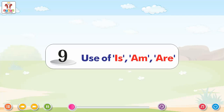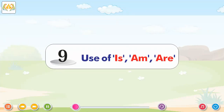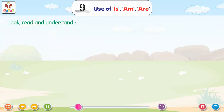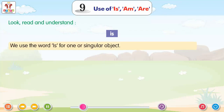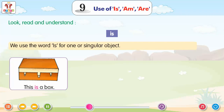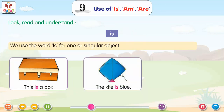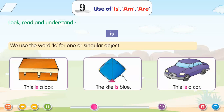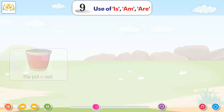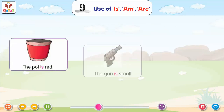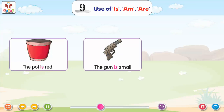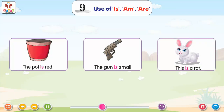Chapter 9: Use of Is, Am, Are. Read and Understand: We use the word 'is' for one or singular object. This is a box. The kite is blue. This is a car. The pot is red. The gun is small. This is a rat.